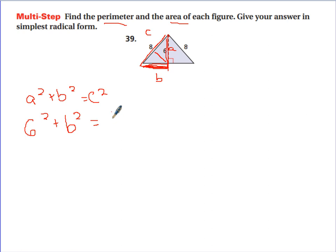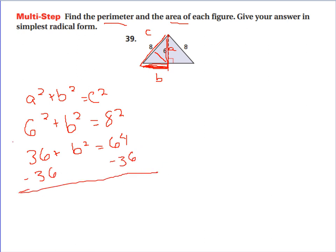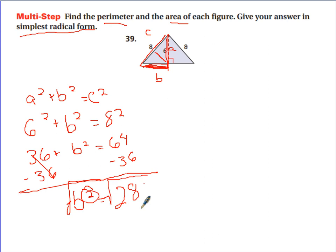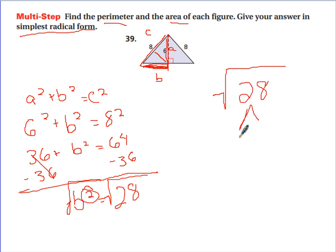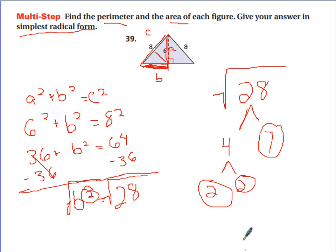A squared plus B squared equals C squared. 6 squared plus B squared equals 8 squared. So 36 plus B squared equals 64. Subtract 36 from both sides: B squared equals 28. Take the square root of both sides — 28 doesn't have a clean square root, so we do the factor tree. 28 is 4 times 7; 4 is 2 times 2. There's a match of 2s, and 7 is left over, so B equals 2 square root of 7.